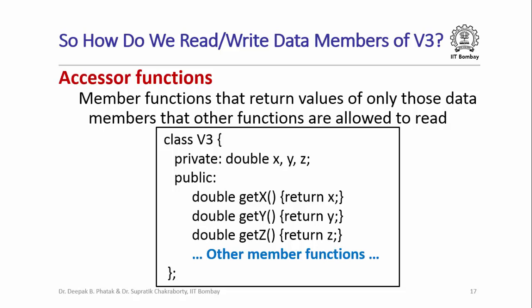If the data members of class V3 are going to be private, then how do we read or write them? There is a preferred way of doing it through what are called accessor functions. These are functions that return values of those data members that other functions are allowed to read. For example, in class V3 with X, Y, Z declared as private, we can declare get_x, get_y, and get_z as public accessor member functions which can be used anywhere in the program to access the values of the private data members X, Y, and Z.